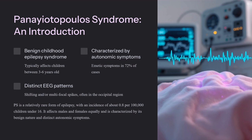P.S. presents itself as a benign childhood syndrome, with characteristics of autonomic symptoms and shifting and/or multifocal spikes, often in the occipital region of the brain during an electroencephalogram. The incidence of P.S. has been reported to be about 0.8 per 100,000 children younger than 16 years of age. Since P.S. is a fairly new childhood epileptic disorder, it warrants serious attention from clinicians, general practitioners, health professionals, public health workers, and parents to appropriately address and treat it.